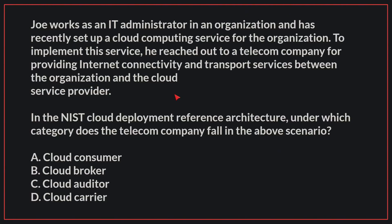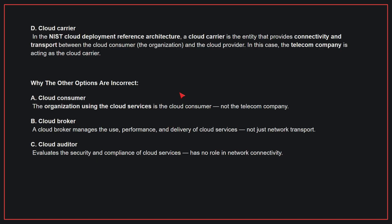Joe works as an IT administrator in an organization and has recently set up a cloud computing service for the organization. To implement this service, he reached out to a telecom company for providing internet connectivity and transport services between the organization and the cloud service provider. In the NIST cloud deployment reference architecture, under which category does the telecom company fall in the above scenario? The correct answer is D. Cloud carrier. In the NIST cloud deployment reference architecture, a cloud carrier is the entity that provides connectivity and transport between the cloud consumer and the cloud provider. In this case, the telecom company is acting as the cloud carrier.